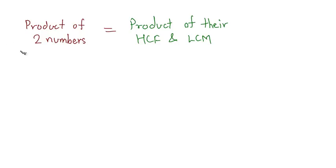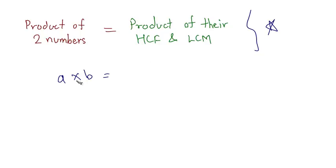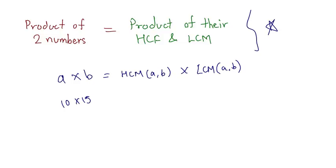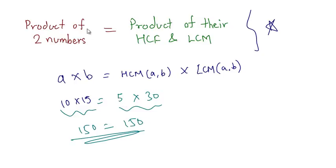The product of two numbers is equal to the product of their HCF and LCM. This is an important relation between HCF and LCM. So if you have two numbers A and B, their product equals the product of the HCF of A and B and the LCM of A and B. For example, the HCF of 10 and 15 is 5 and the LCM is 30. You will find that 10 × 15 = 150 and 30 × 5 = 150 — both expressions are equal.